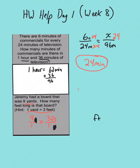And then we just solve this. There's no more reducing. 9 times 3 is 27. 1 times 1 is 1. So my answer is 27 feet.